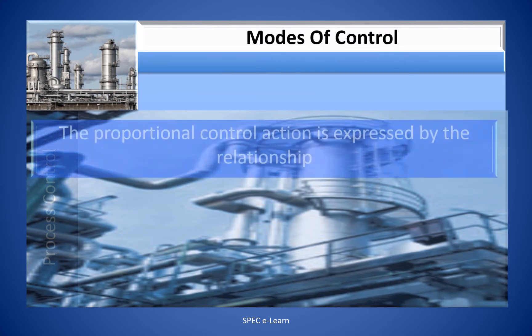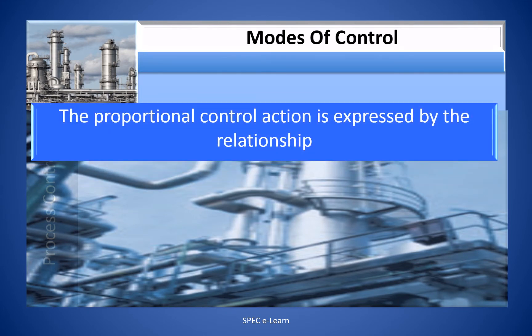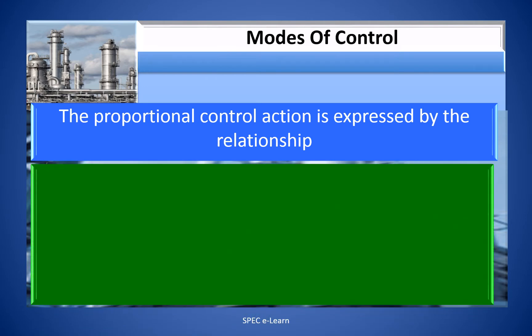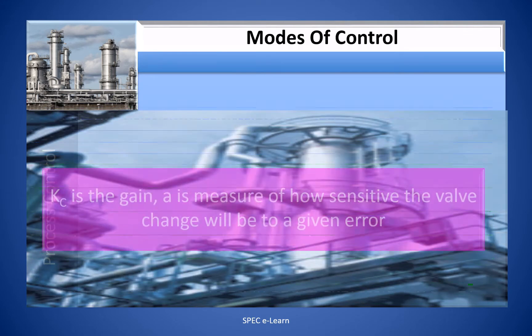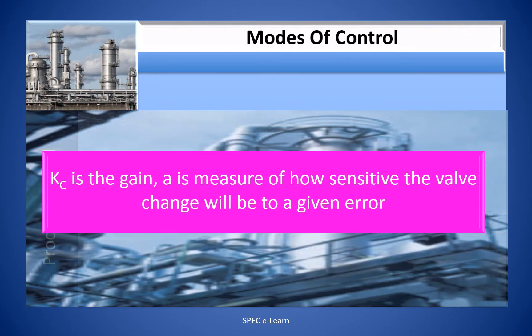The proportional control action is expressed by the relationship: MV = KC·E + I, where MV is the manipulated variable, KC is the controller gain (which is adjustable), E is the error, and I is the initial value of MV — the controller output or offset. KC is the gain, which is a measure of how sensitive the valve change will be to a given error.